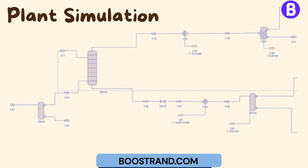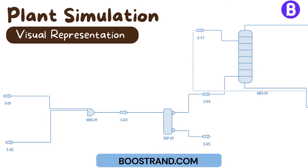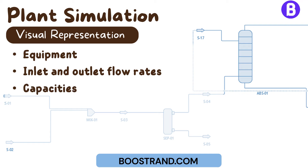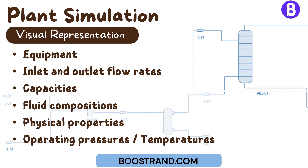Plant simulation allows process engineers to create a virtual representation of the plant process, thereby figuring out what is needed to achieve the target of building the plant. Through a proper process simulation, we can know what pieces of equipment are required, their expected inlet and outlet flow rates, or in other words capacities, fluid compositions, physical properties, and the operating pressures and temperatures at each piece of equipment.